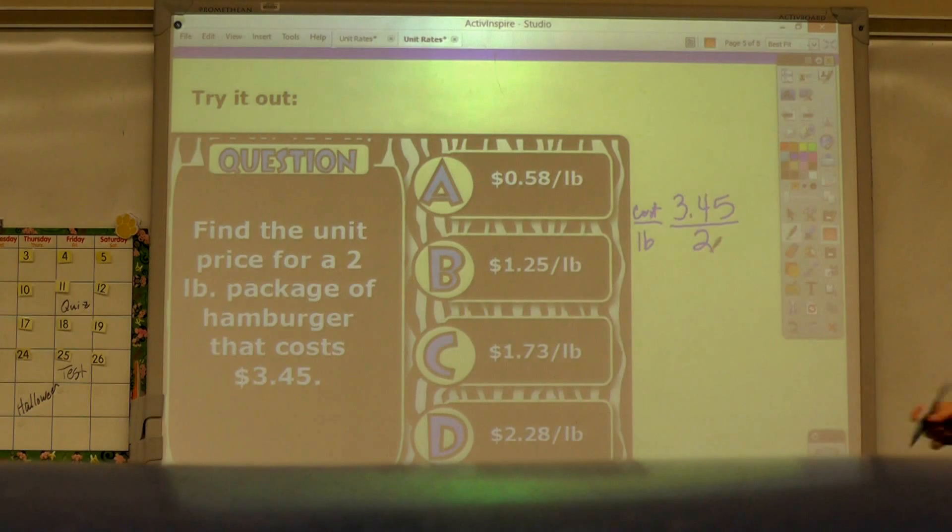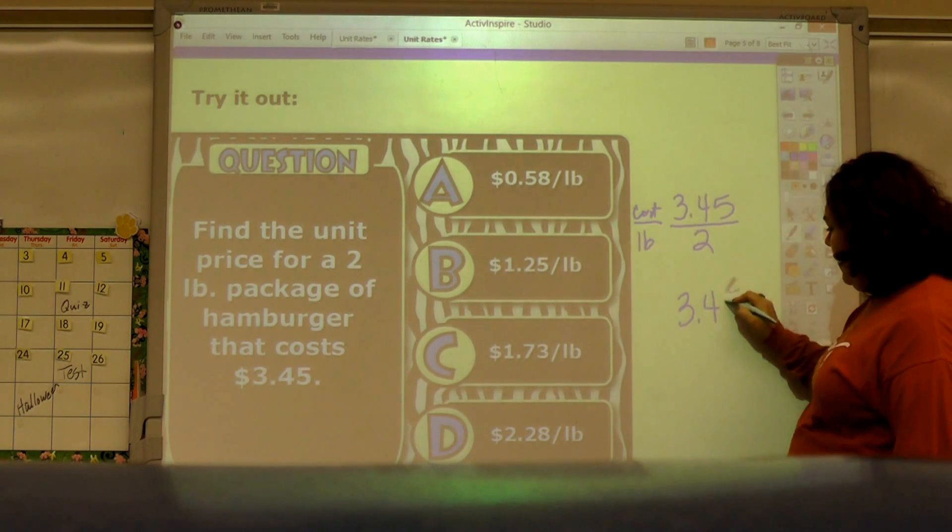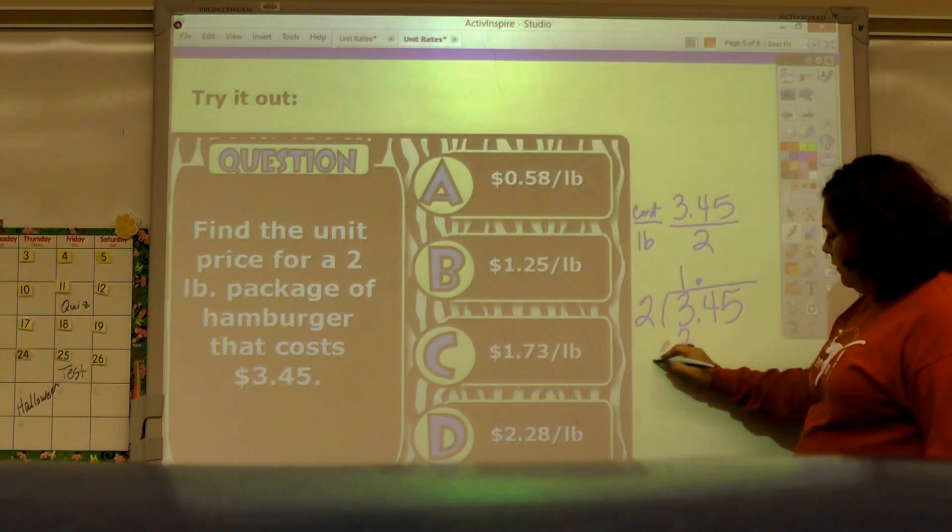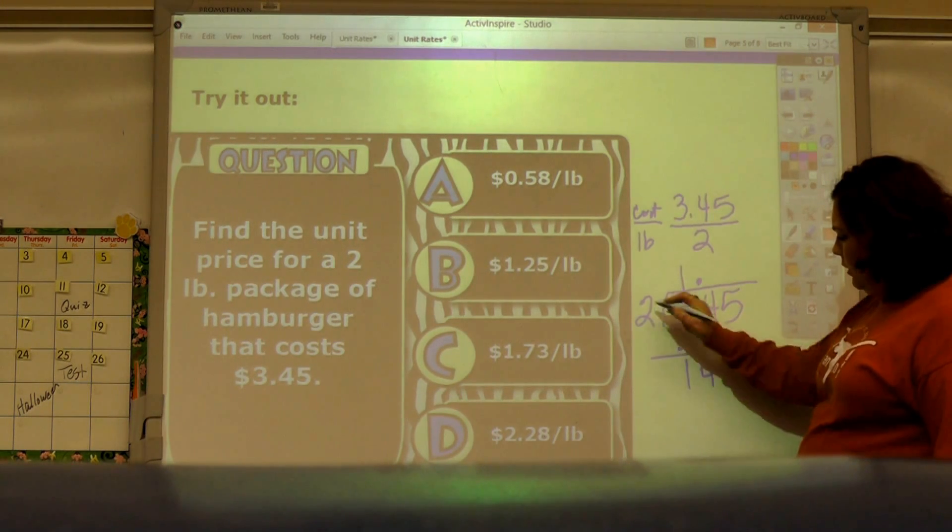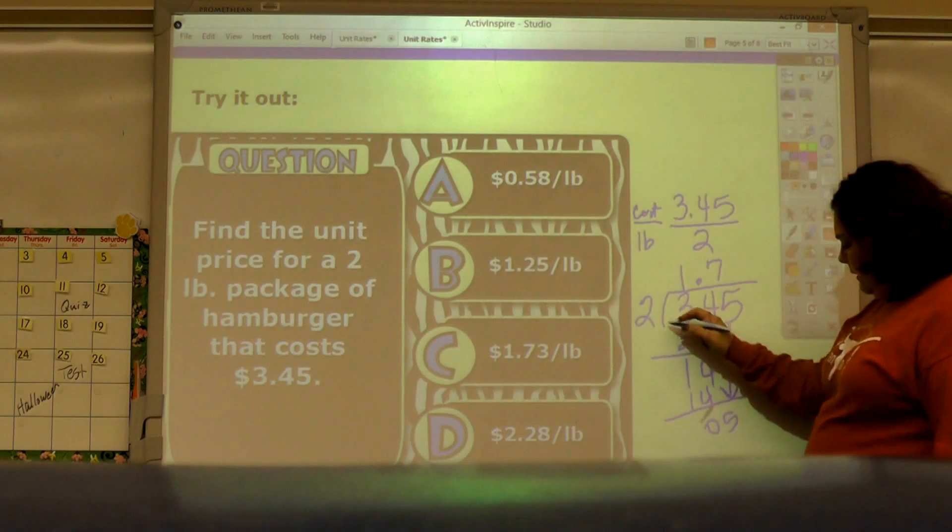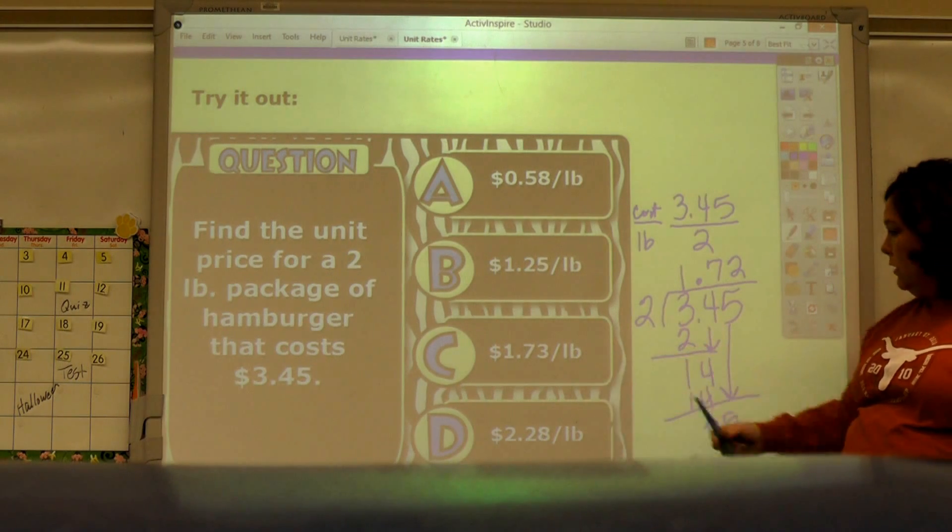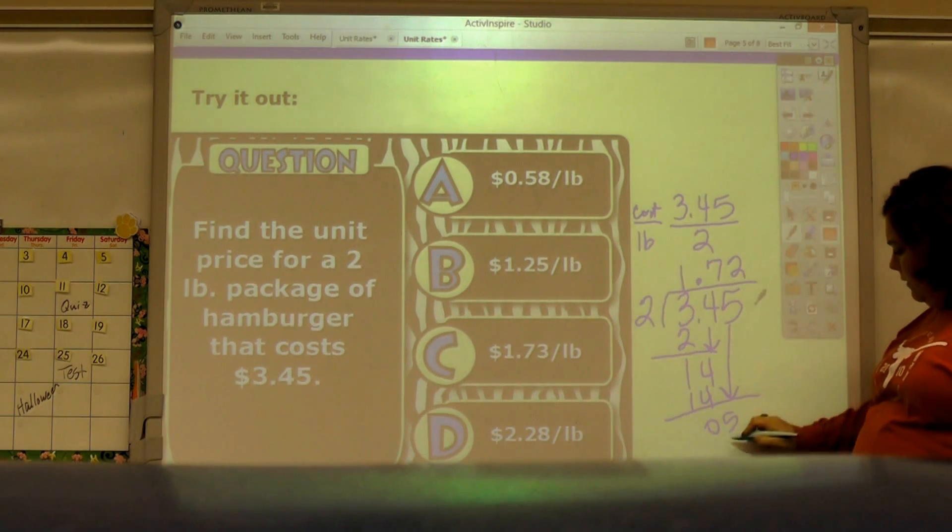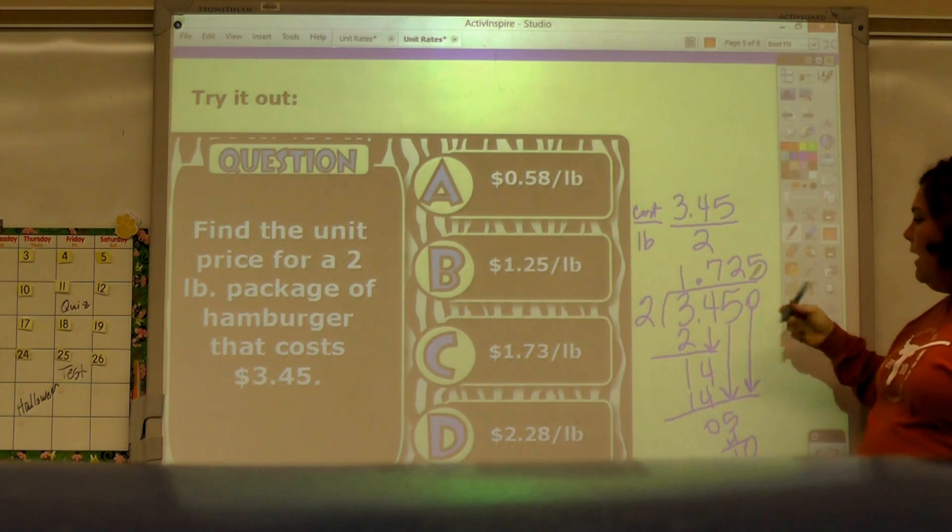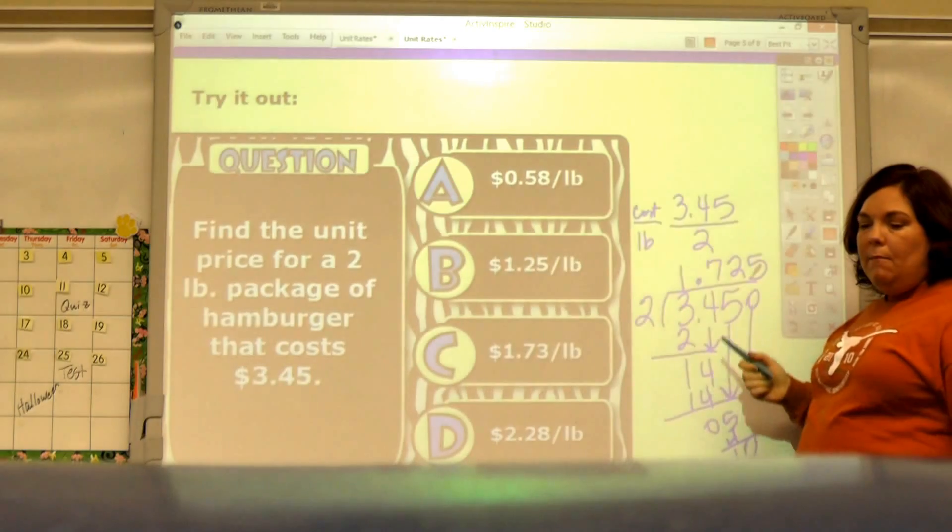You're going to put cost on top and pounds down here, and this means divide by. So you get 3.45 divided by 2. Your decimal comes straight up, 2 goes into 3 one time, bring down the 4, 2 goes into 14 seven times, bring down the 5, 2 goes into 5 two times. Now I don't see this answer but I see something really close, so you have to bring this down and add a zero, bring it down, now 2 goes into 10 five times, and this 5 rounds a 2 to a 3.